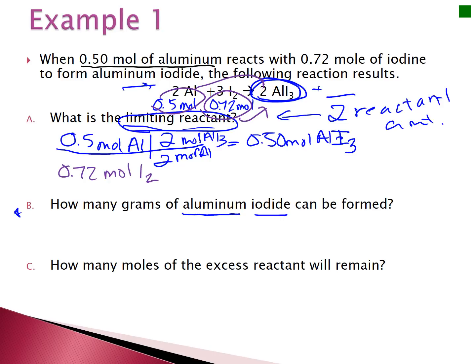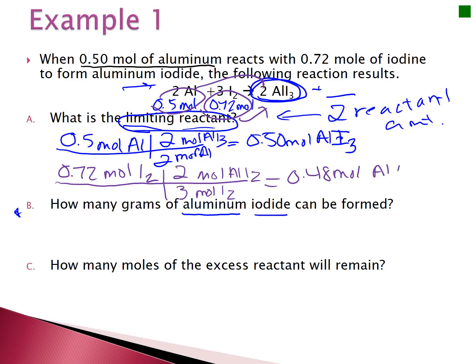For the second stoichiometry problem, start with 0.72 moles of iodine and convert to moles of aluminum iodide. Using the balanced reaction, the ratio is 2 moles of aluminum iodide to 3 moles of iodine. So 0.72 moles of iodine can produce 0.48 moles of aluminum iodide. Meanwhile, 0.5 moles of aluminum can produce 0.50 moles of aluminum iodide.